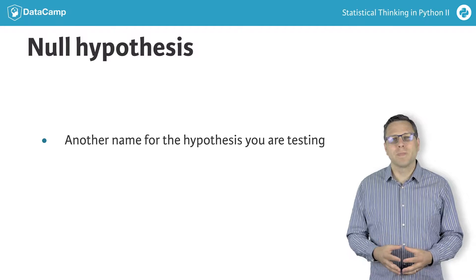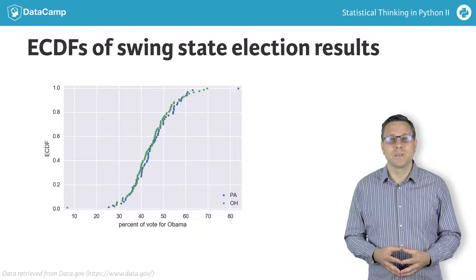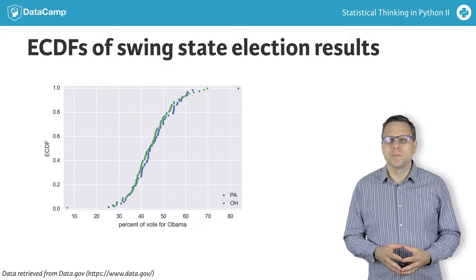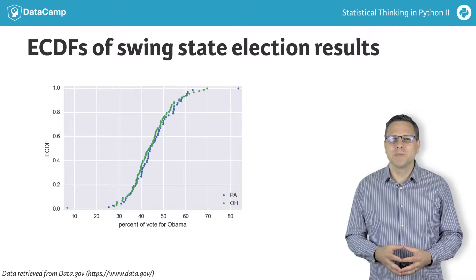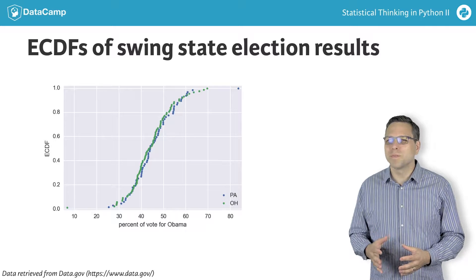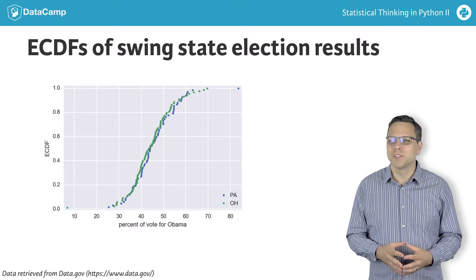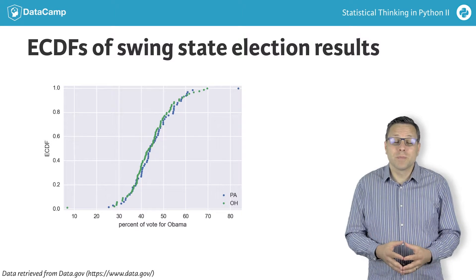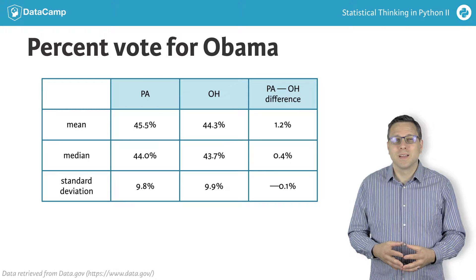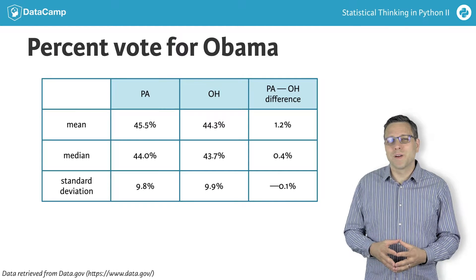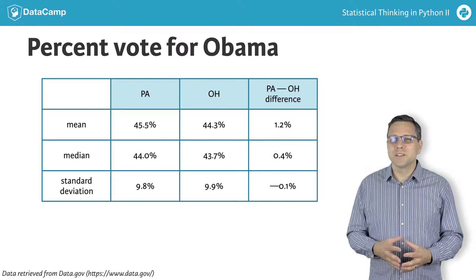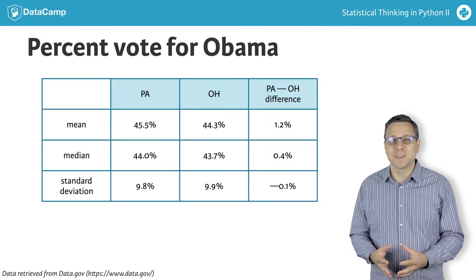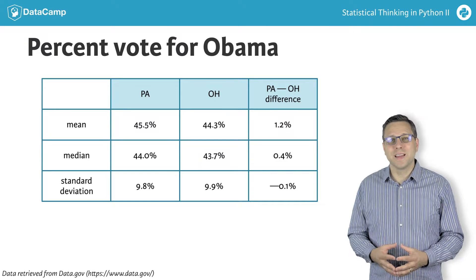We might start by just plotting the two ECDFs of the county-level votes. It's pretty tough to make a judgment here. Pennsylvania seems to be slightly more toward Obama in the middle part of the ECDFs, but not much — we can't really draw a conclusion. We could just compare some summary statistics, but again, this is a tough call. The means and the medians of the two states are really close, and the standard deviations are almost identical. So eyeballing the data is not enough.